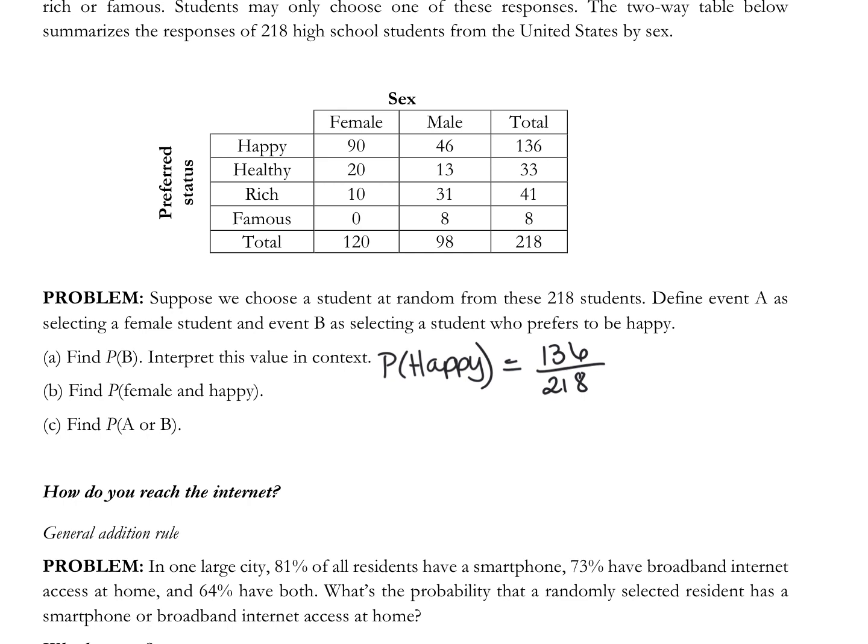Then find the probability of female and happy. So how many students said, how many female students said they want to be happy? 90. 90 of the female students said happy. And we are selecting them from the total. So this is 90 out of how many? 218.